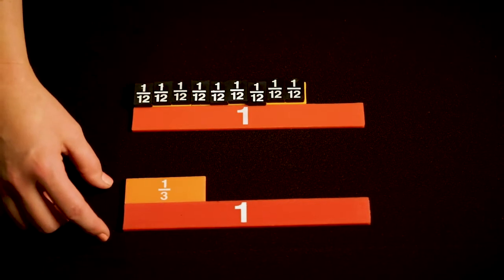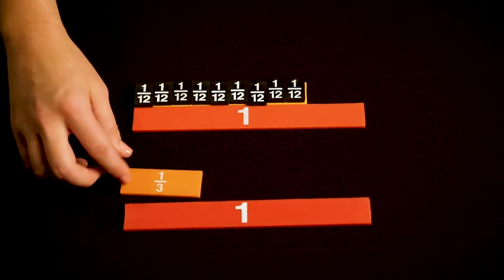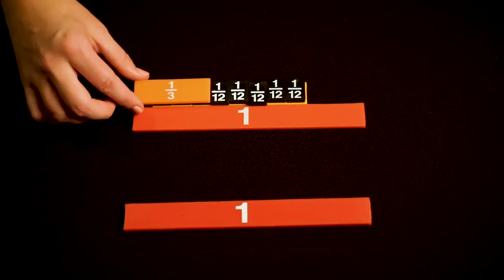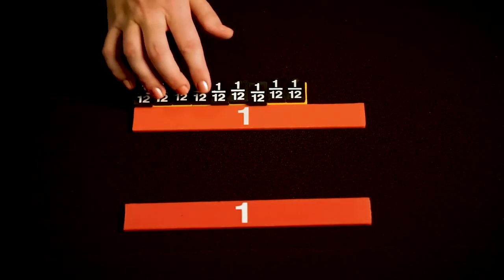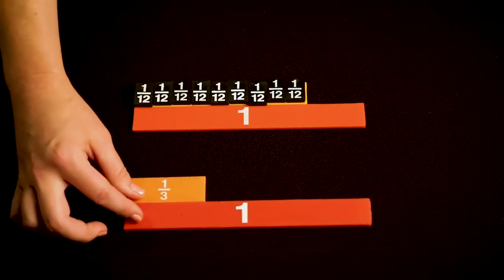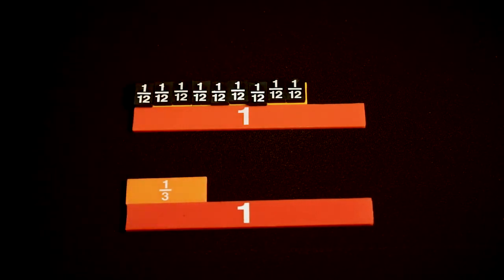We want to take away 1 third. You can do this a few different ways. I could take this 1 third piece and figure out that it's equivalent to 4 twelfths, and then we could take those 4 twelfths pieces away. I could also leave this here and figure out what this 1 third equals in twelfths.